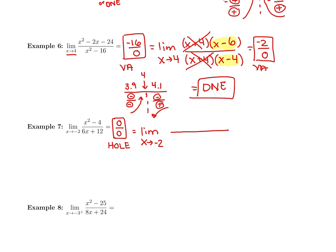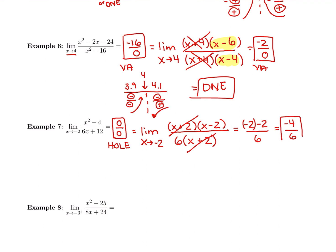We take the limit as x approaches negative 2 and factor. The top, x squared minus 4, is a difference of two squares: (x + 2)(x − 2). The bottom, 6x + 12, has a greatest common factor of 6: 6(x + 2). The (x + 2) terms cancel. Plugging in negative 2: top gives negative 2 minus 2 = negative 4; bottom gives 6. The limit is negative 4 over 6, which reduces to negative 2 thirds.